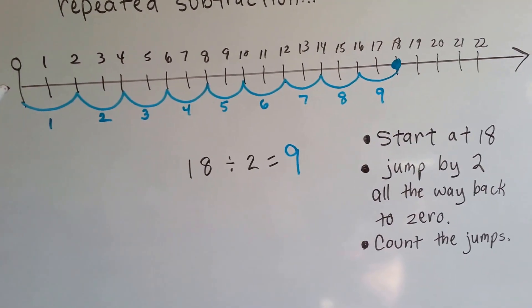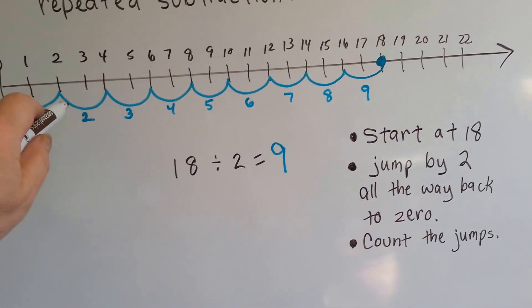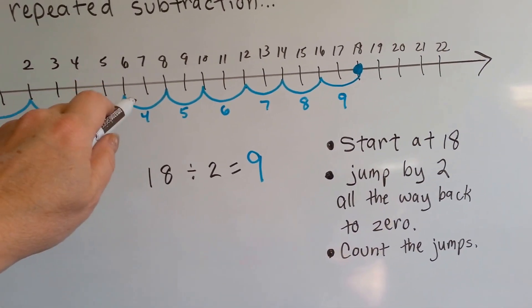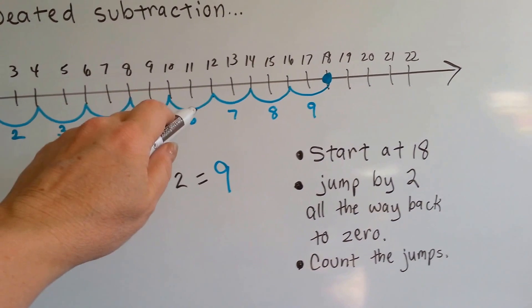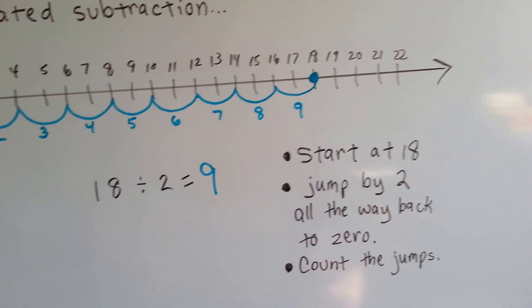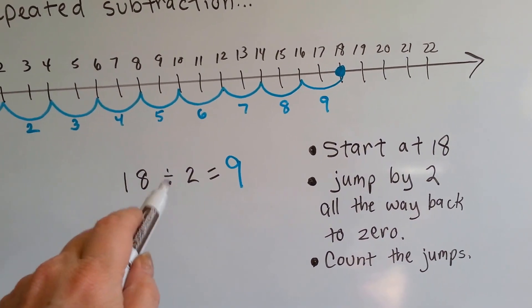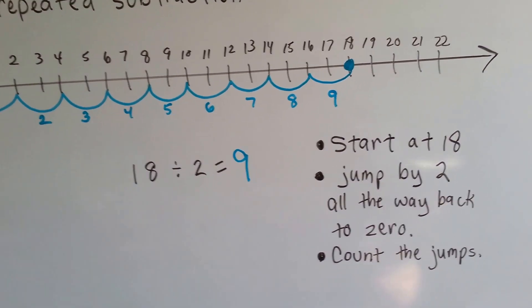Then we count how many jumps we did: 1, 2, 3, 4, 5, 6, 7, 8, 9 jumps. So we know 18 divided by 2 equals 9.